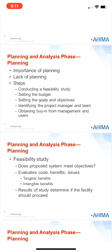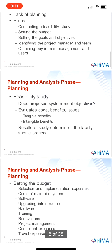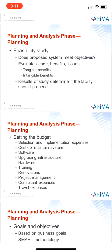Number two in planning is setting the budget. Developing the budget for a system selection project is important as cost is a key determining factor in deciding whether or not to implement an information system. The budget should be comprehensive and as accurate as possible because it is used in the decision-making process. The budget should include system selection and implementation expenses as well as the cost of maintaining the information for a specified period such as two to five years, and items such as cost of software, upgrading infrastructure, hardware, training, renovations to the physical plant, maintenance, project management, consultant expenses, and travel expenses for site visits.